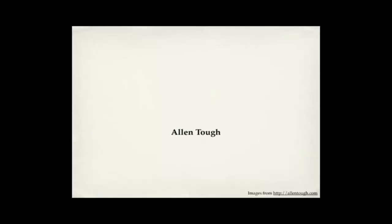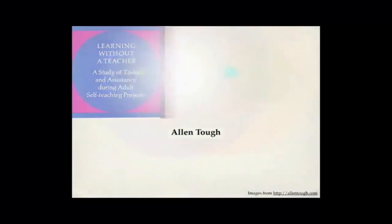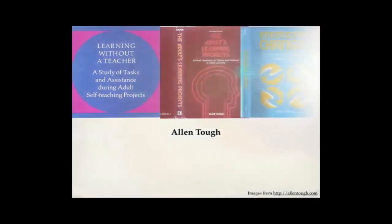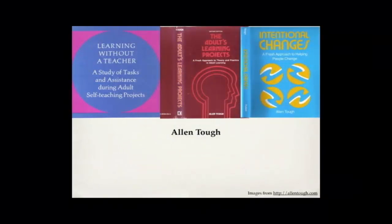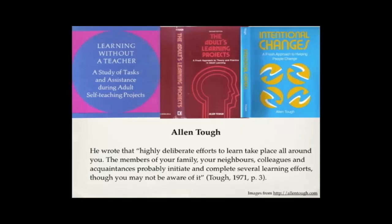It is generally accepted that Canadian researcher Alan Tough, now Professor Emeritus from the University of Toronto, began the formal research movement in self-directed learning. He wrote his PhD thesis in the 1960s on the behavior of adults during self-directed learning projects. In his books such as Learning Without a Teacher, The Adults' Learning Projects, and Intentional Changes, Tough argued that the formal learning that occurs in educational institutions represents a relatively small percentage of the total amount of learning that adults engage in at a given time. In other words, most adult learning occurs outside formal educational settings, and much of this learning is self-directed. He wrote that highly deliberate efforts to learn take place all around you — the members of your family, your neighbors,